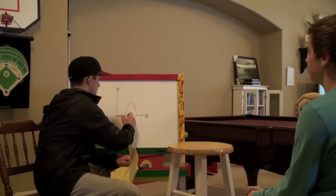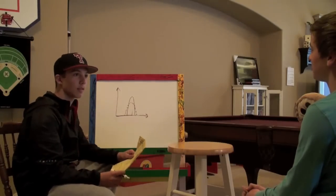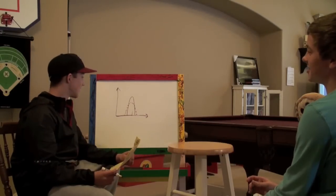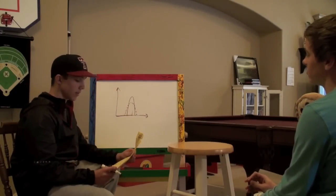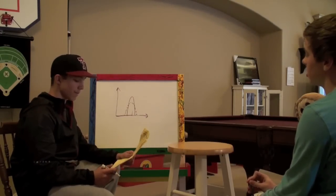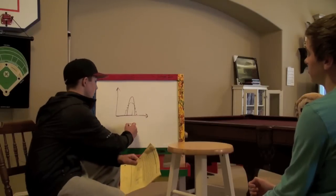Now the next type of graph is this. Can you tell me what this is? Stabilizing selection. Very good. And what is best fit for this graph? The middle. Very good. The middle.